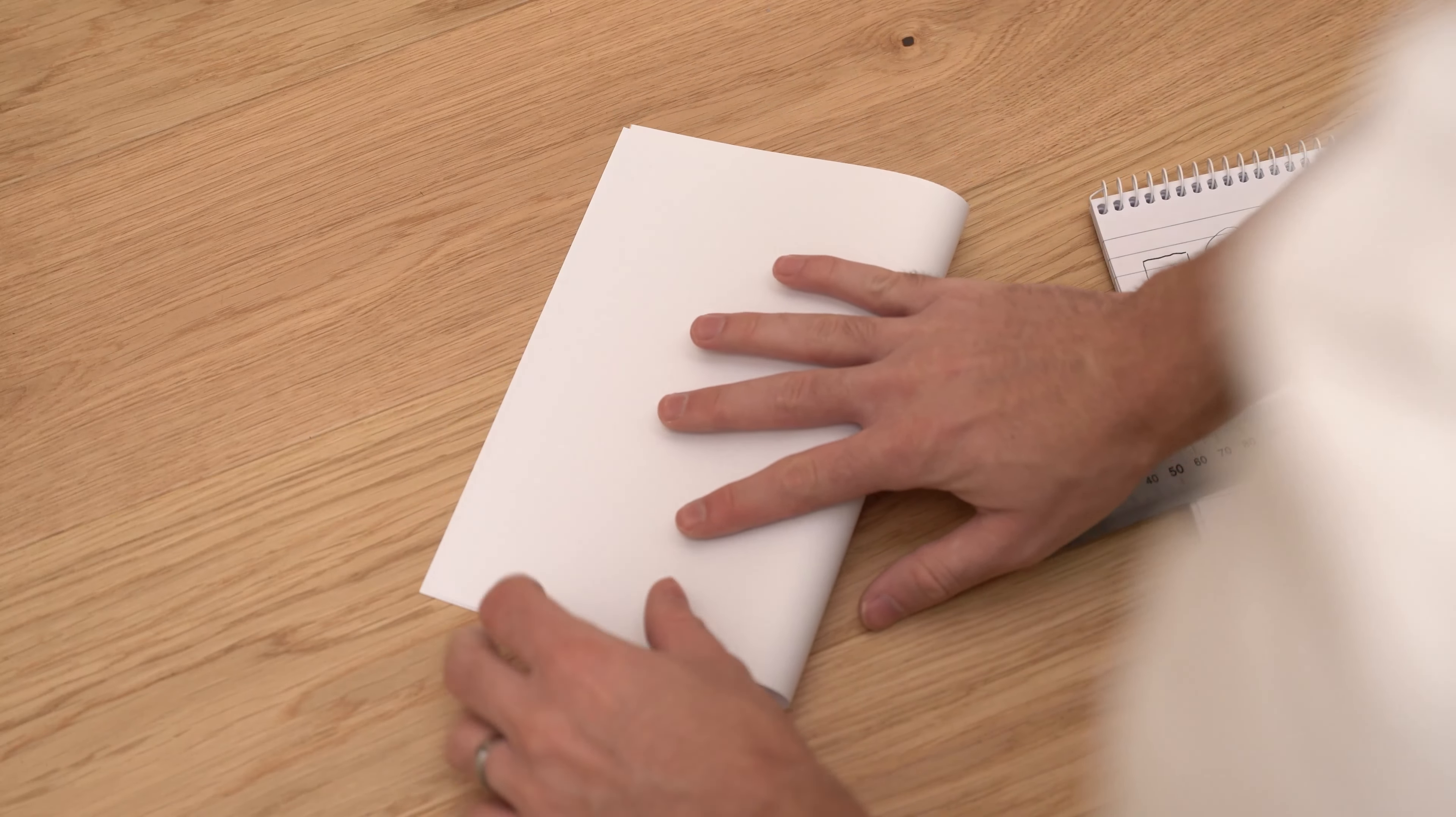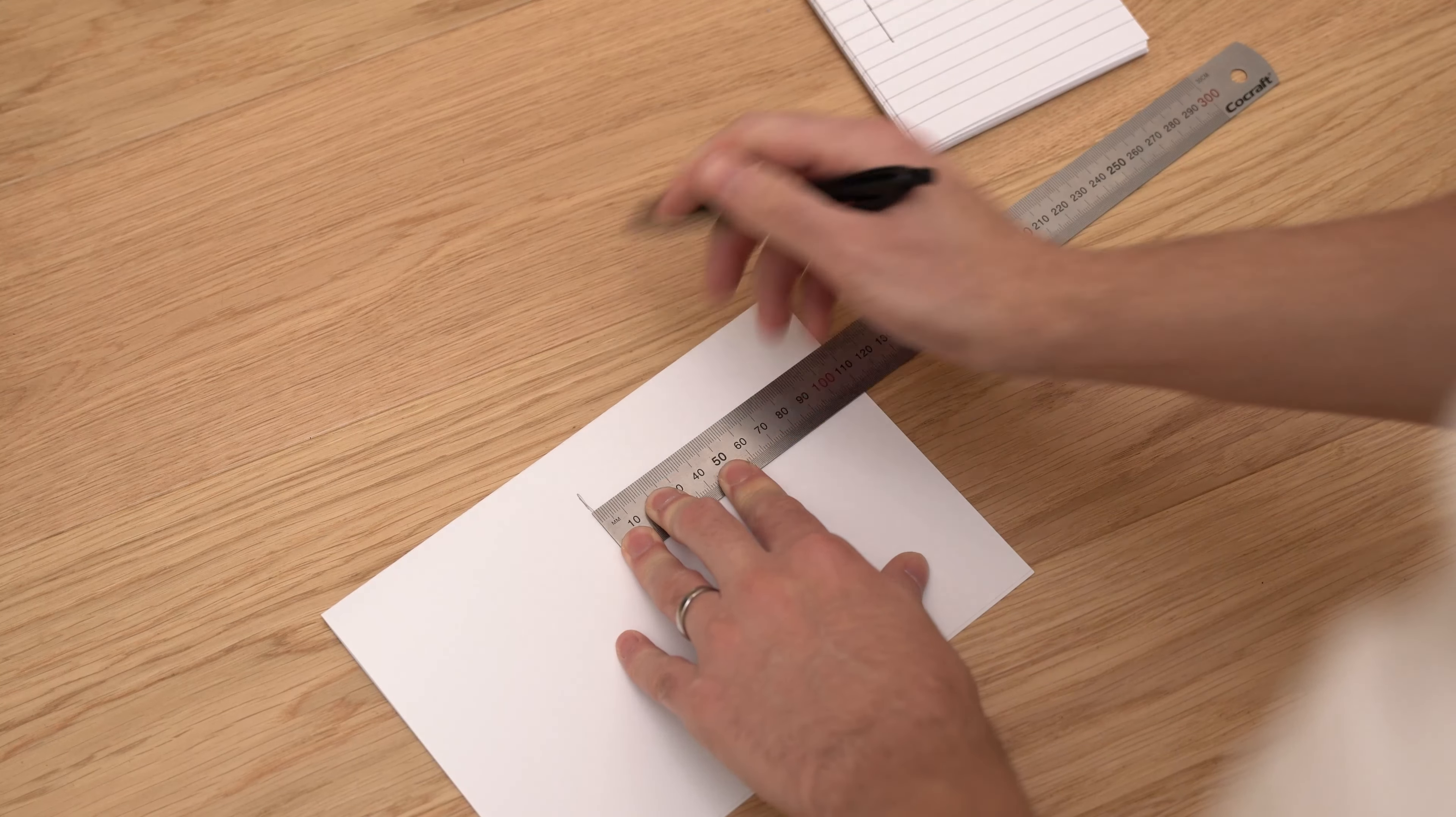We then fold a piece of paper and use the measurements to make a rough outline of the guard.